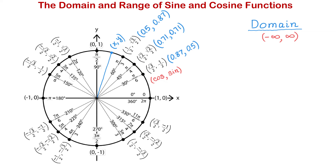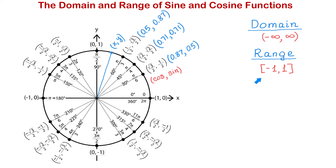In quadrant 2, the values of sine decrease back to 0. In quadrant 3, the values of sine become negative and change from 0 to negative 1. At 3 pi over 2, the value of sine is the lowest at negative 1. In quadrant 4, the values of sine change from negative 1 back to 0. So the smallest value that the sine function takes is negative 1 and the largest value is positive 1. The range of the sine function is any number from negative 1 to positive 1, where the brackets show that negative 1 and positive 1 are included.